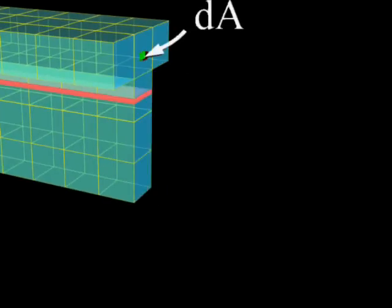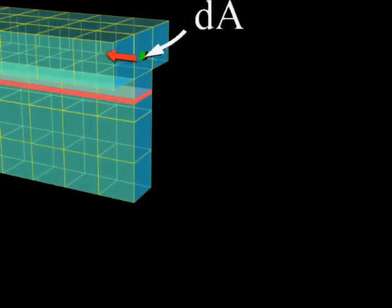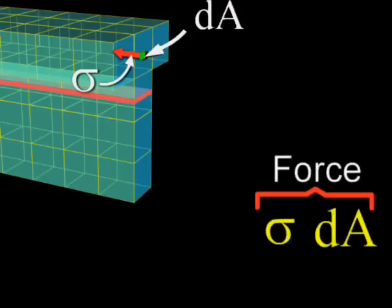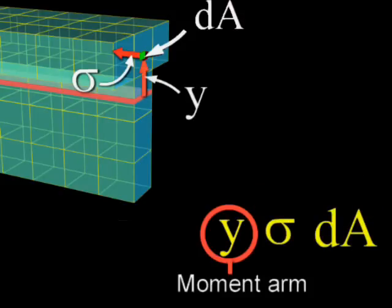For example, this area dA carries a compressive stress of this amount. This produces a force that acts at a moment arm y to produce a moment.